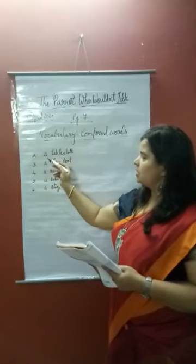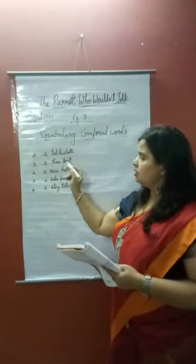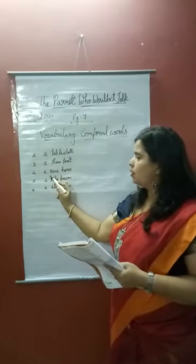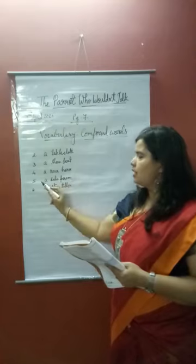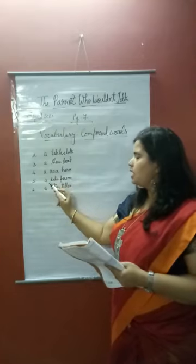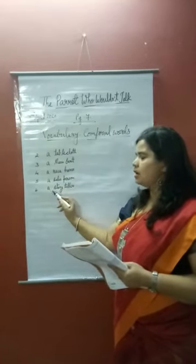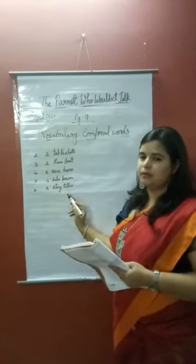To repeat the answers: number 2 — tablecloth; number 3 — steamboat; number 4 — racehorse; number 5 — salesperson; number 6 — storyteller.